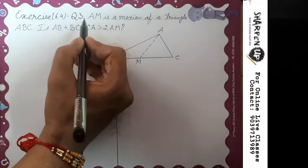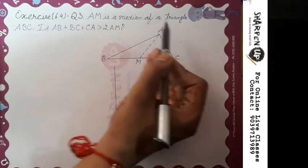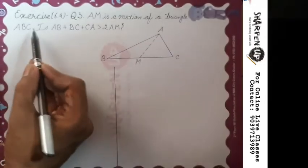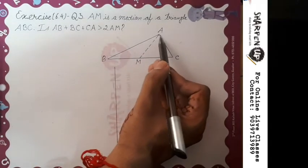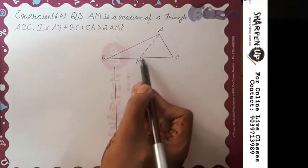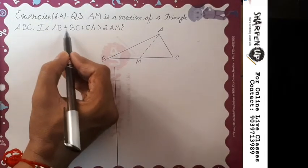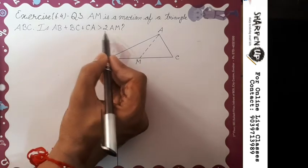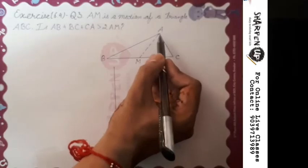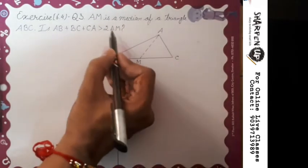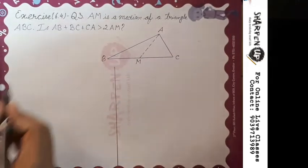Exercise 6.4, question number 3. AM is a median of triangle ABC. The question asks: is AB plus BC plus CA greater than two times of AM? So basically, they want to know if the perimeter of a triangle is greater than two times of its median. Let's see how to prove it.